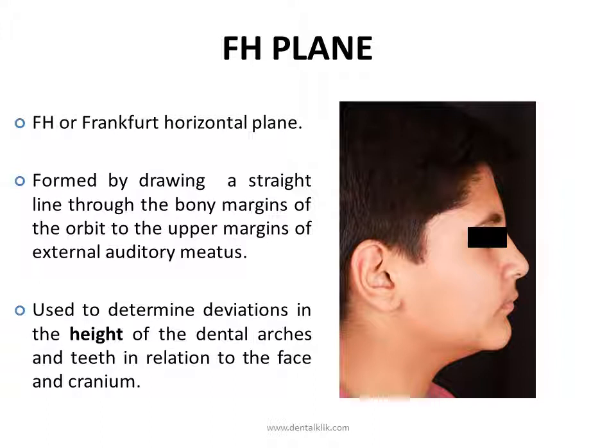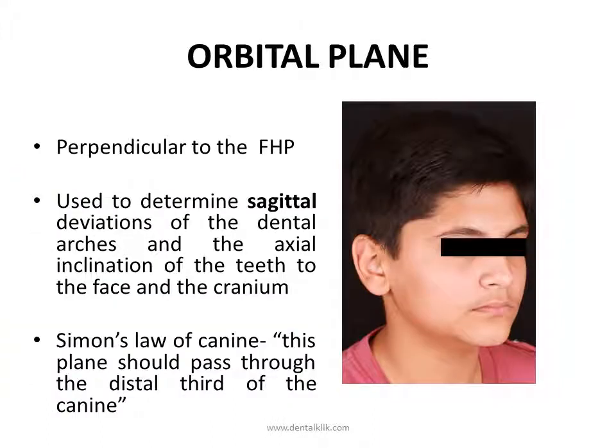The Frankfurt horizontal plane, or the eye-ear plane, is determined by drawing a straight line through the margin of the bony orbit directly under the pupil of the eye to the upper margin of the external auditory meatus — that is, the notch above the tragus of the ear. This plane is used to determine deviations in the height of the dental arches and teeth in relation to the face and cranium.